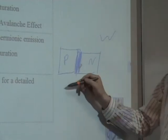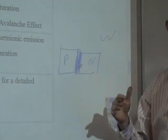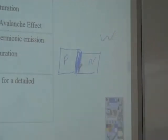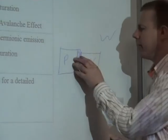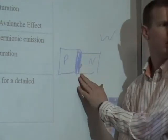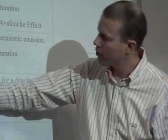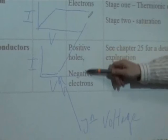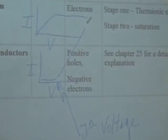Once it goes through that junction voltage, the depletion layer is broken down completely and no longer exists. Now you have no resistance, so the current starts to increase dramatically like that. Your charge carriers in this case are positive holes and negative electrons.